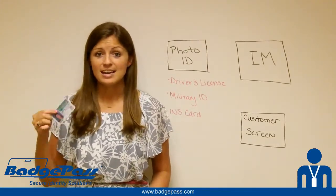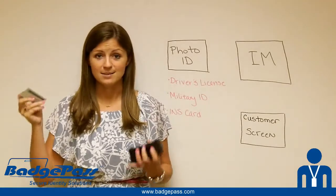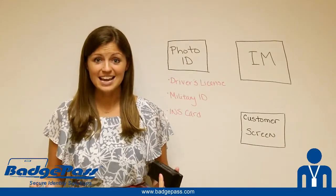We call that feature automated enrollment. What we've done in this version is we've taken the ability to capture that information off an ID, like a driver's license, military ID, or INS card. All the person has to do is simply scan their ID into the Badge Pass driver's license reader, and the system is going to automatically populate with all the information stored on the MagStripe or 2D barcode on the back of that ID. It makes the process of enrolling people in Badge Pass Identity Manager ridiculously fast and easy.